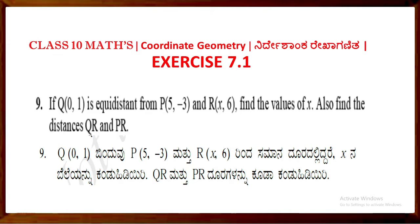Given: Q(0,-2), P(5,-3), R(x,6). We need to find x, and then calculate QR and PR.